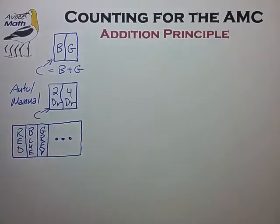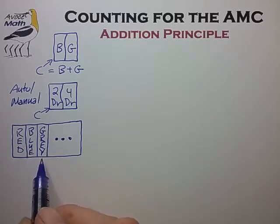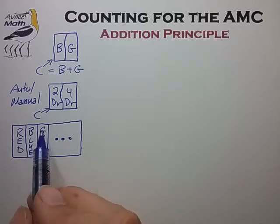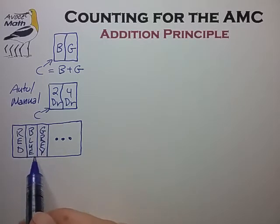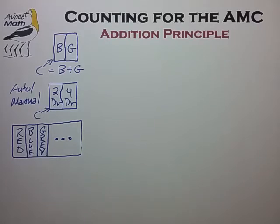We have a problem when we try to divide our cars into colors, because some people disagree about the color of a specific car, and some car models actually consist of two colors. For instance, some cars have a body in blue and a top in gray, so there's an opportunity for these color subsets to overlap.